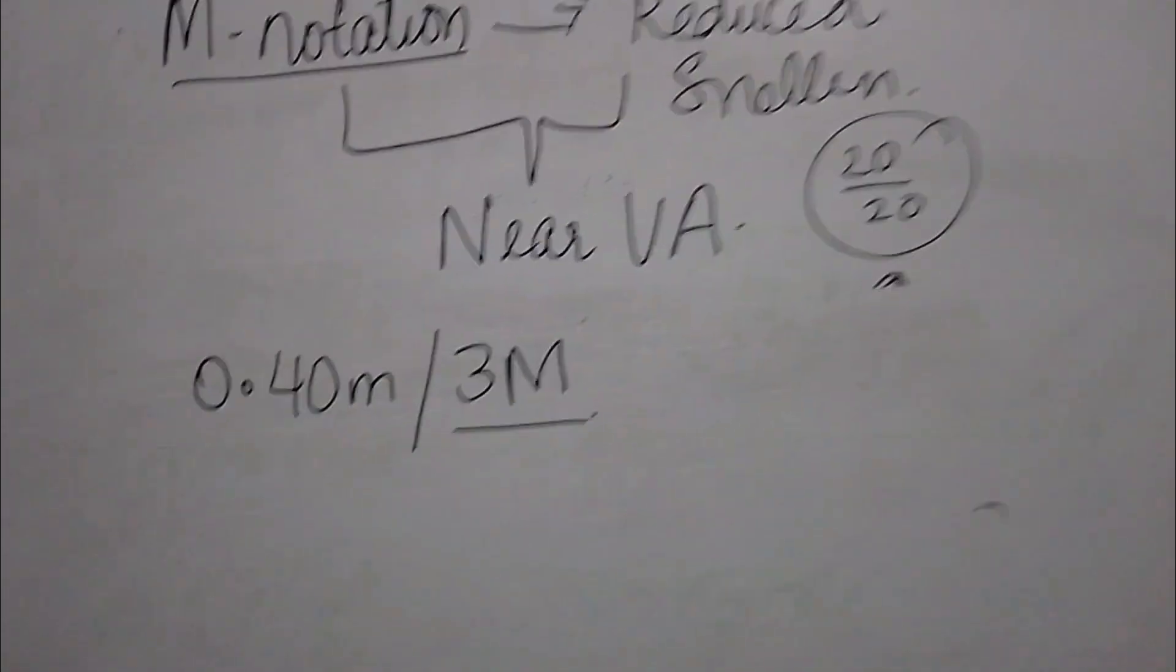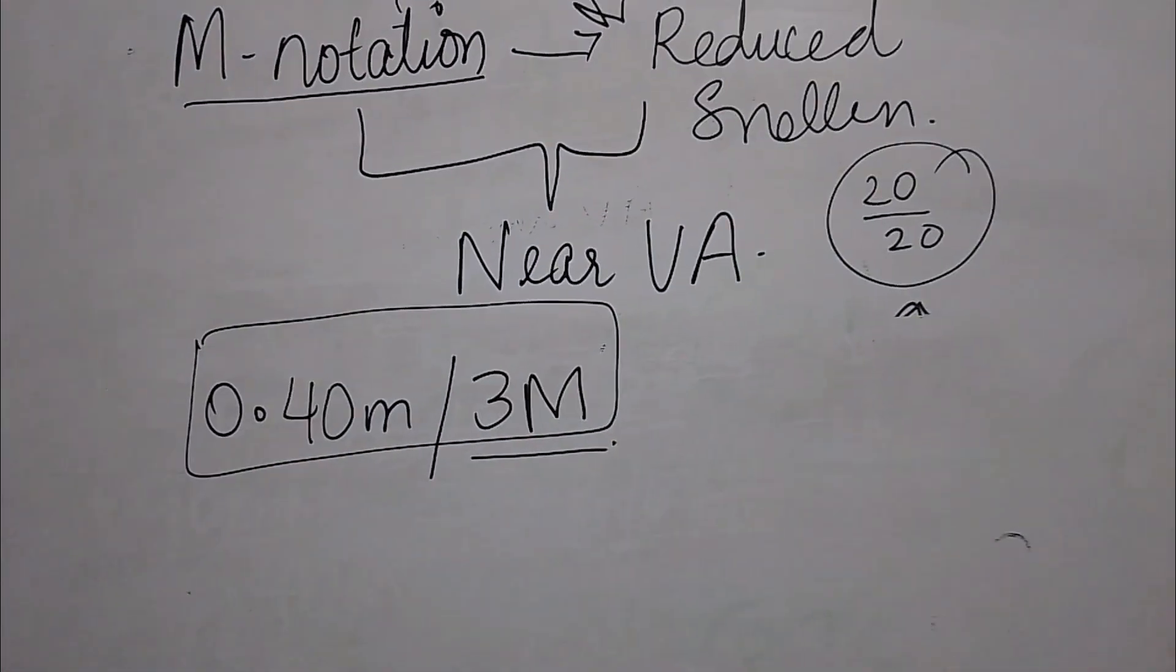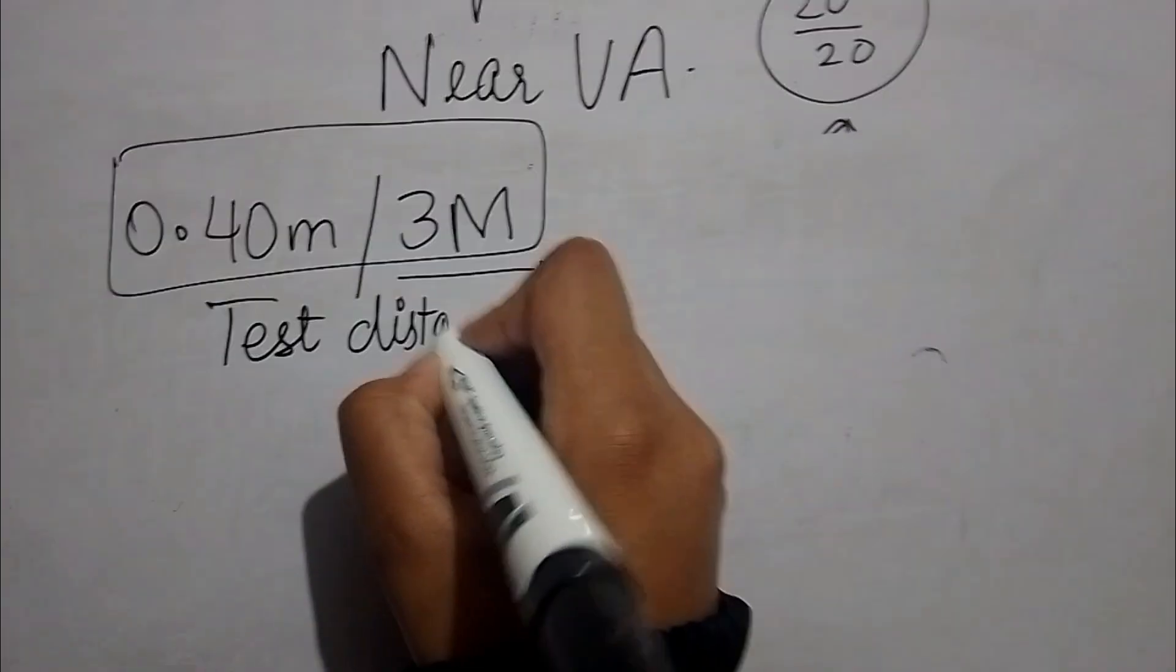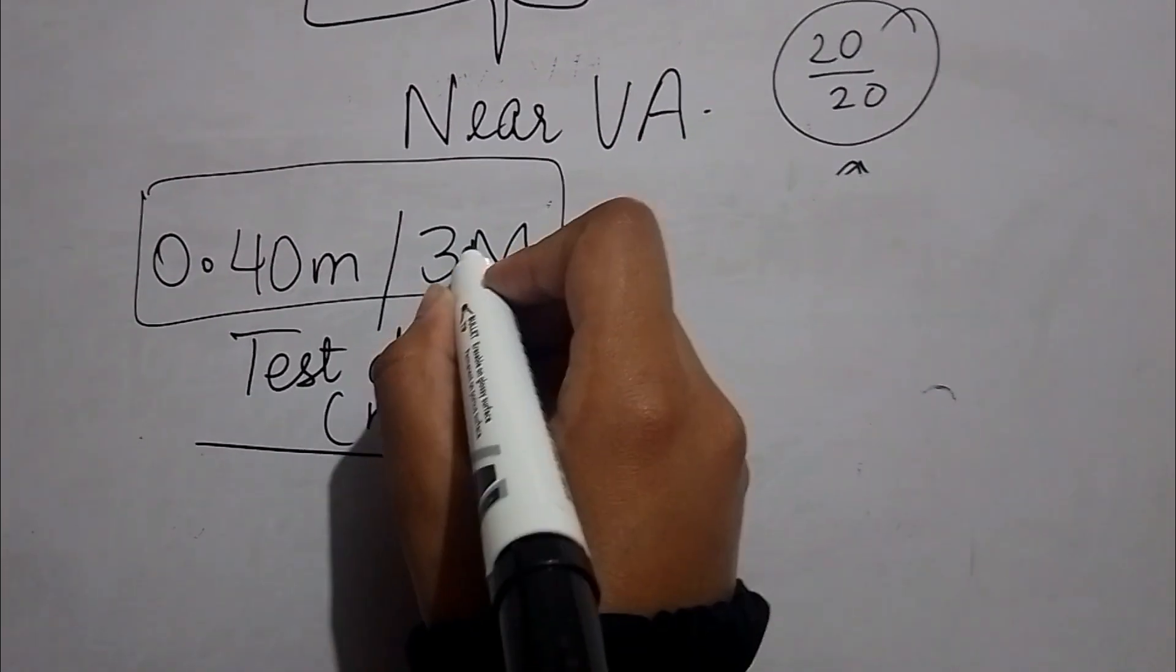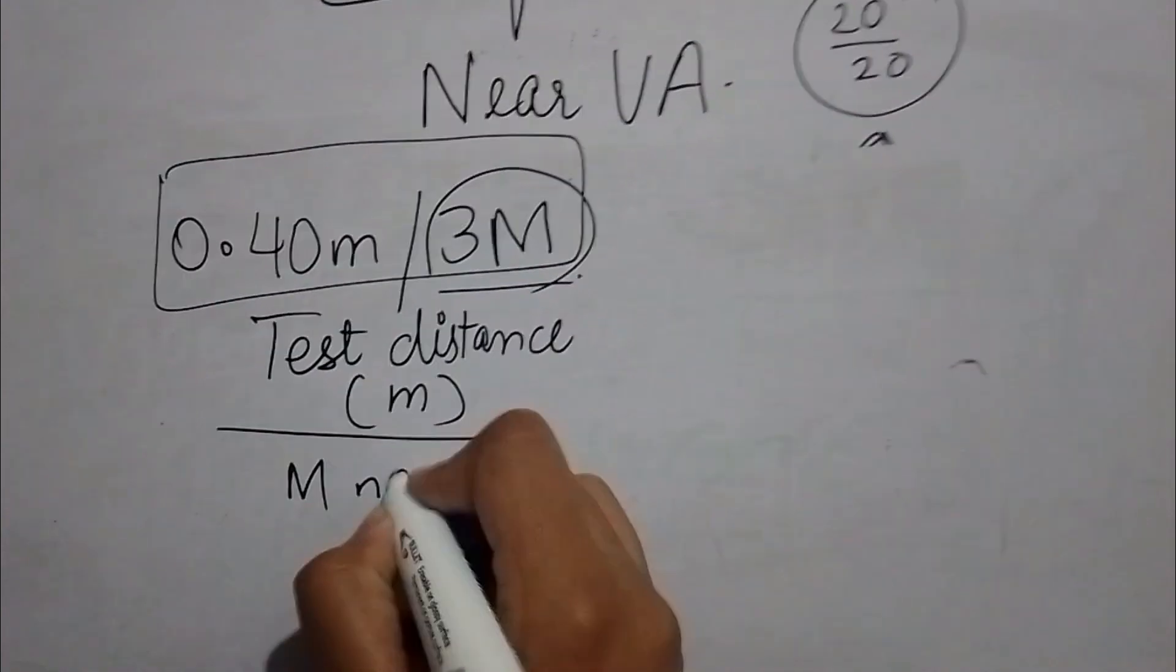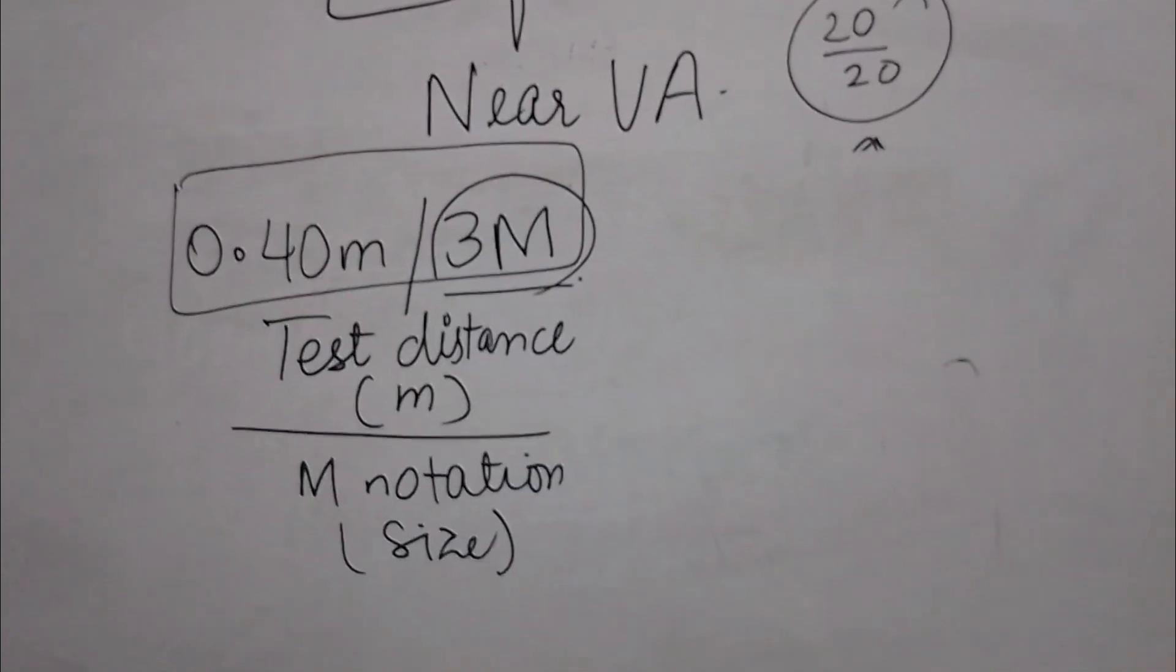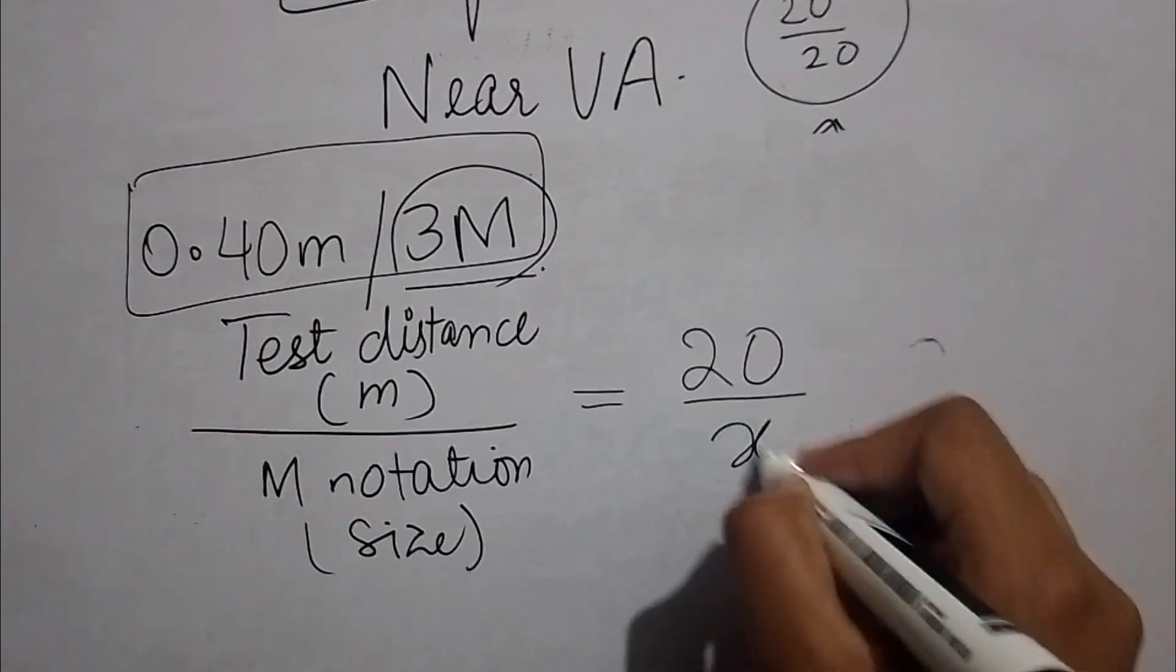What you will do is that you have to remember always this recording. You have to remember the formula that states testing distance in meters, in meters, in the denominator the M-notation value, M-notation or you can just say size of the letter that the patient reads, equals to 20 over X.